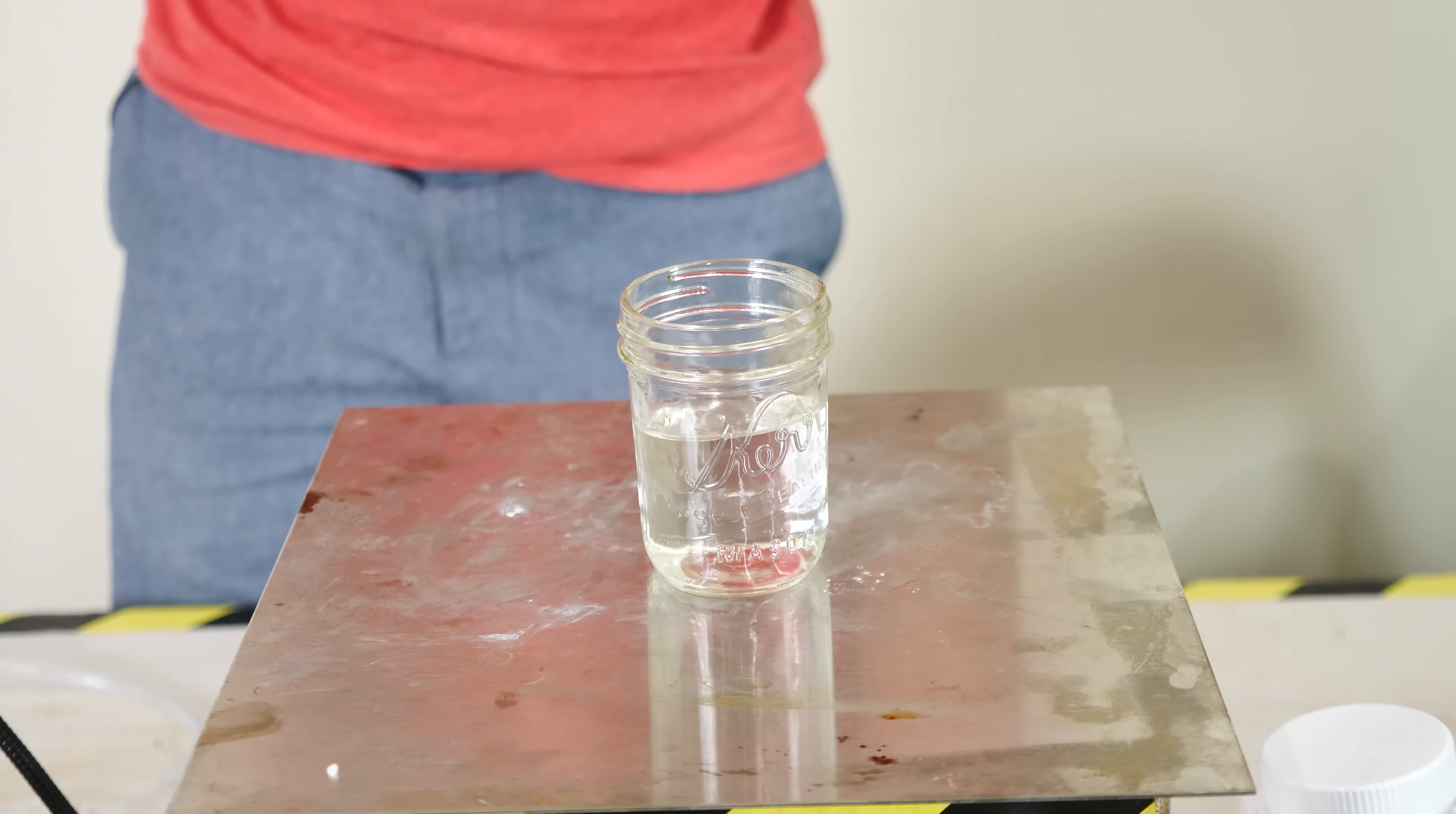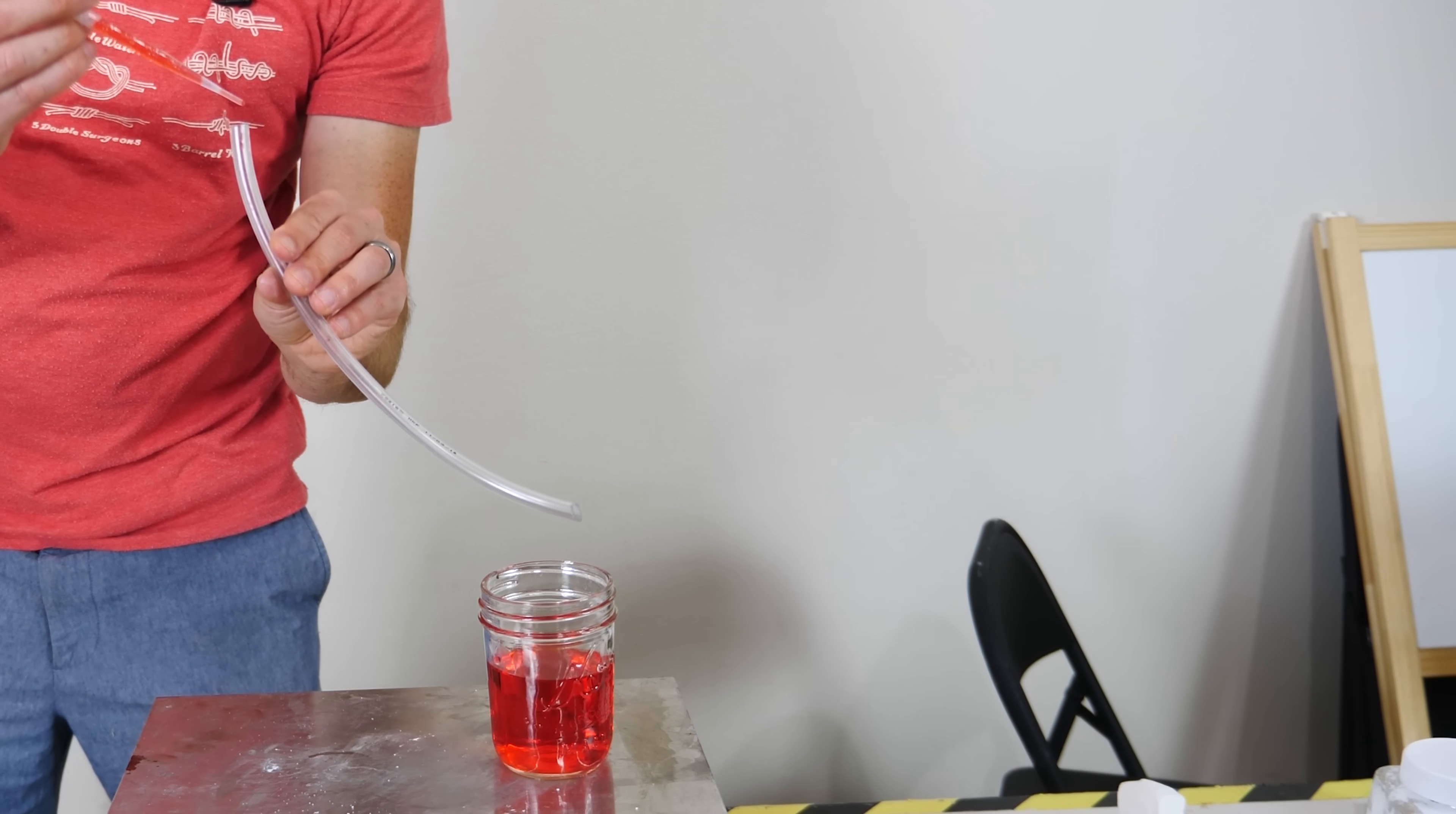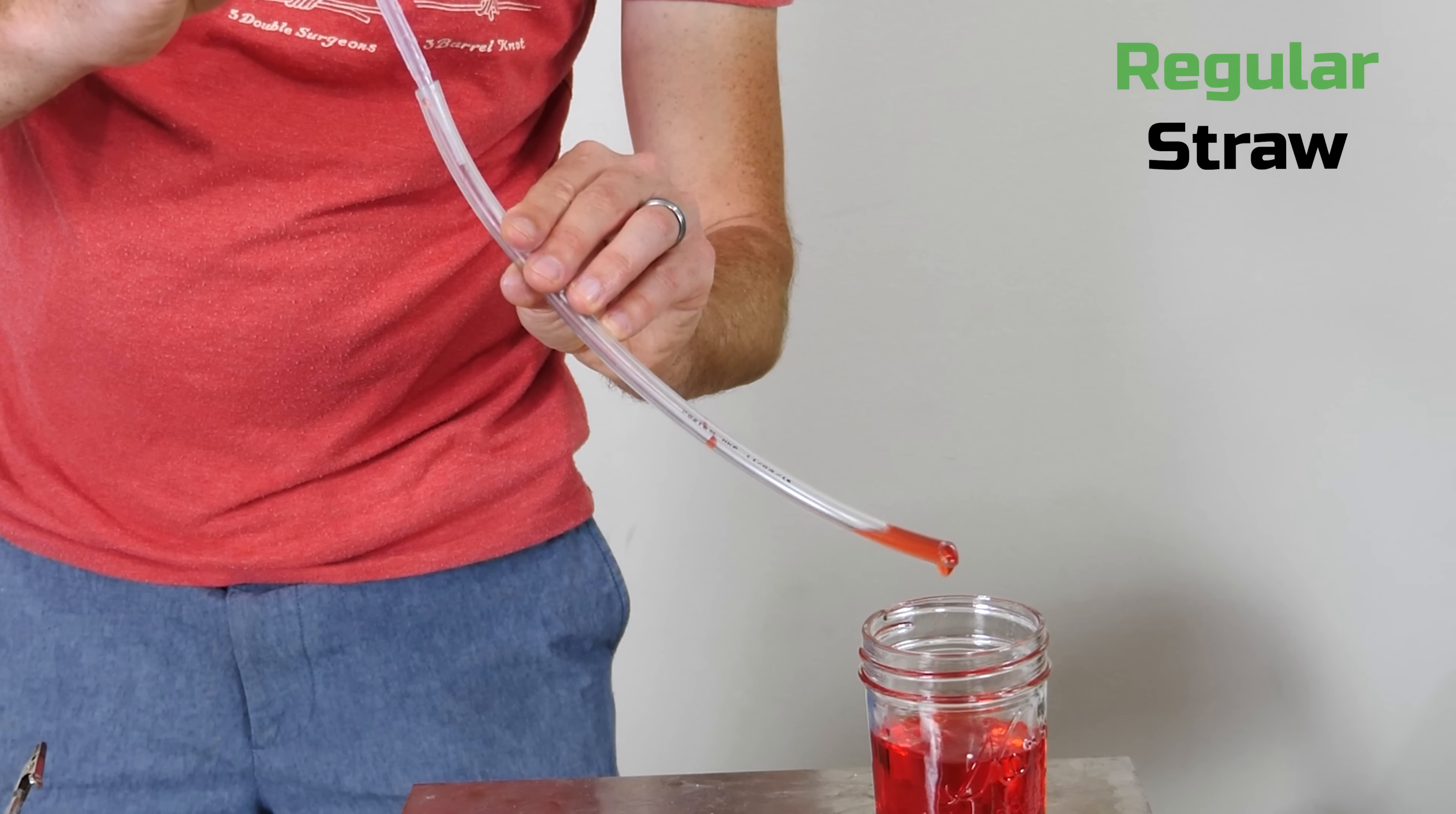So I have some water in this cup, I'm going to dye it red. Let's see what happens when we drop water through our regular straw here. So it's about what you'd expect here. Kind of just fills up the straw and dribbles out the end.